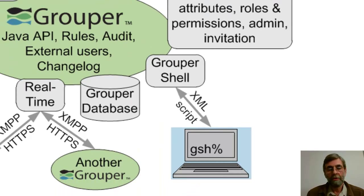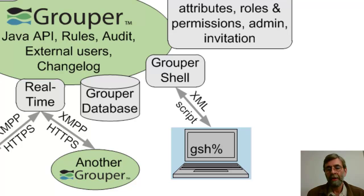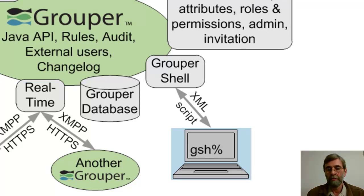Looking at the bottom, there's the Grouper database, and the main point is that most popular relational database management systems are supported by Grouper. We rely on Hibernate to abstract us away from the details of how your particular database works. We also have a complete shell environment — you can have 100% access to all of the Java API and other capabilities that Grouper offers through the shell. There's also XML import and export capabilities offered through the Grouper shell.